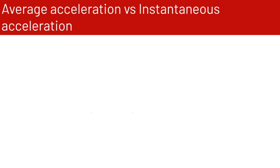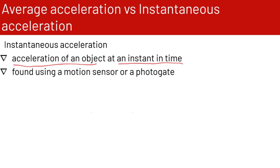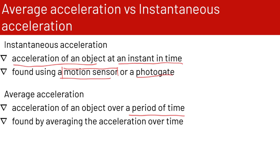Let's talk about average acceleration versus instantaneous acceleration. Instantaneous acceleration is the acceleration of an object at an instant in time — we find it using a motion sensor or a photo gate. Average acceleration is the acceleration of an object over a period of time, which we find by averaging acceleration over time.